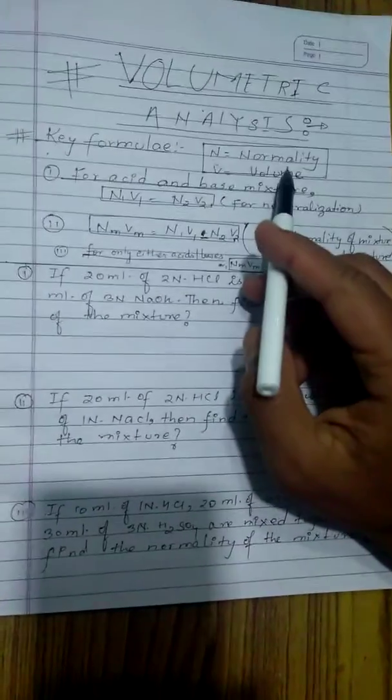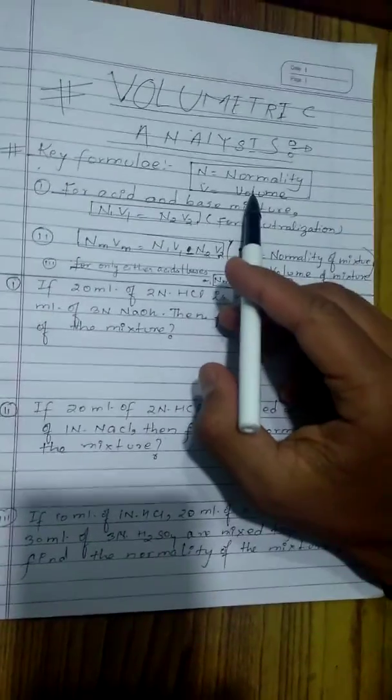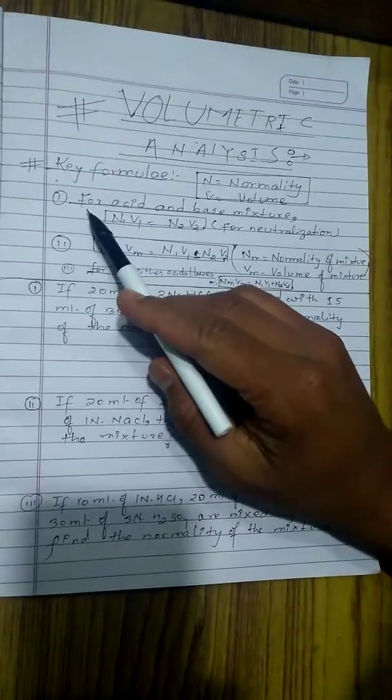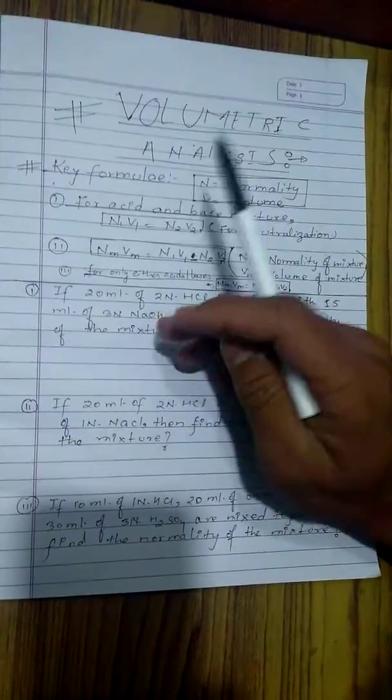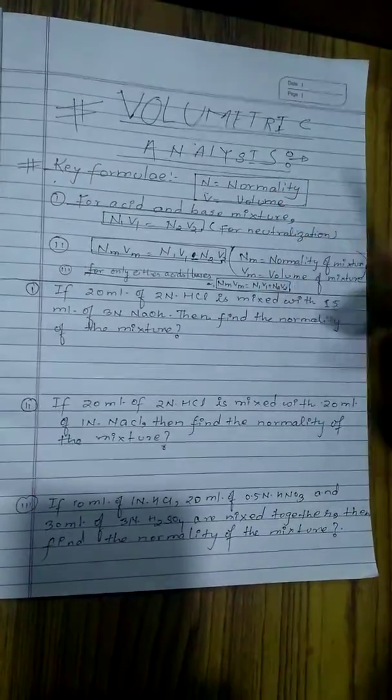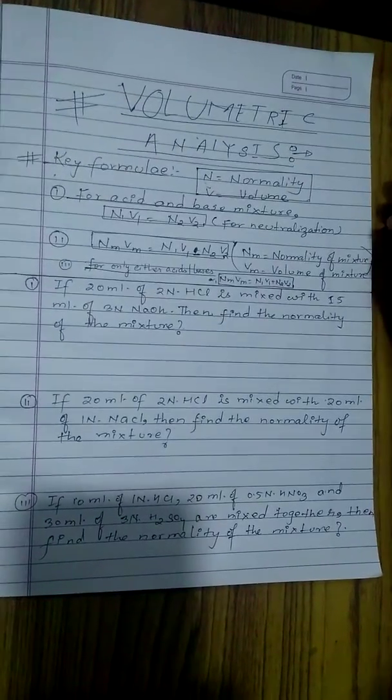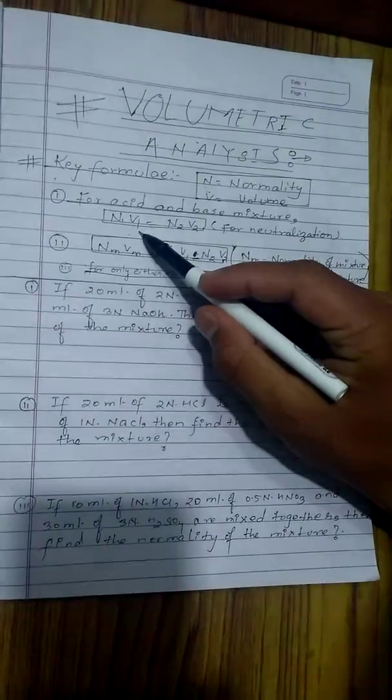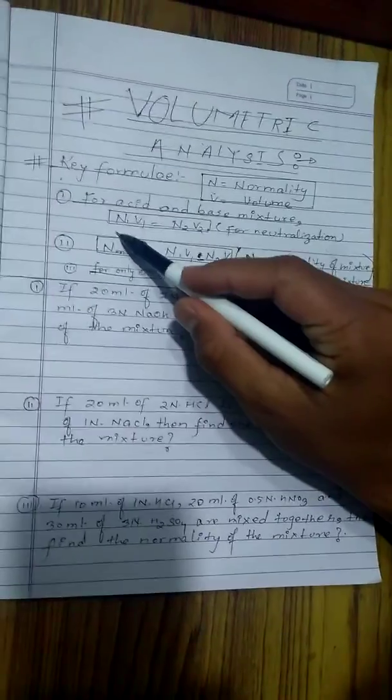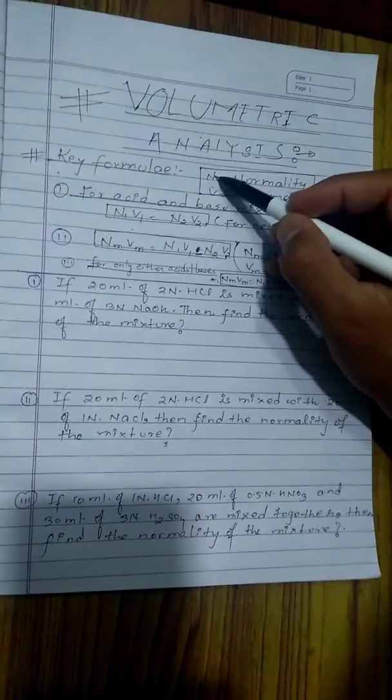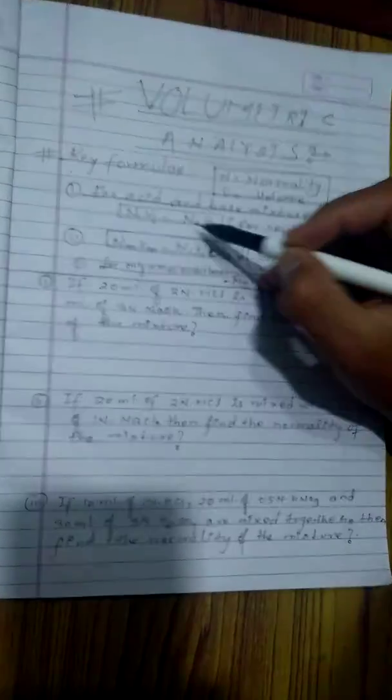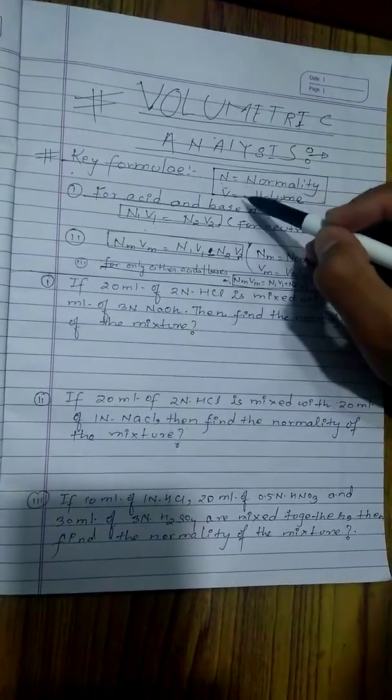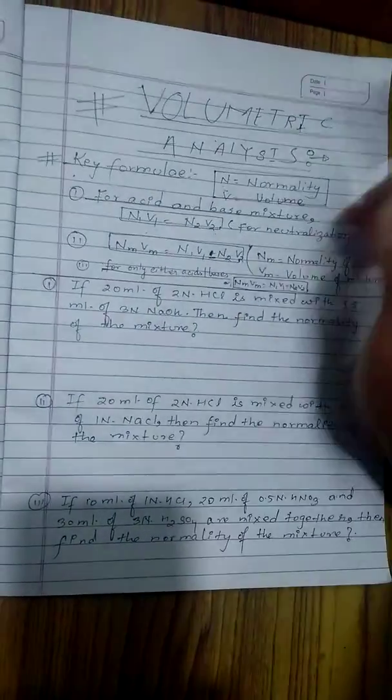For acid, if we mix the acid and base and then if neutralization takes place, then we use the formula N1V1 equals N2V2, where N1 and V1 are the normality and volume for acid, and N2 and V2 are the normality and volume for base. That's all.